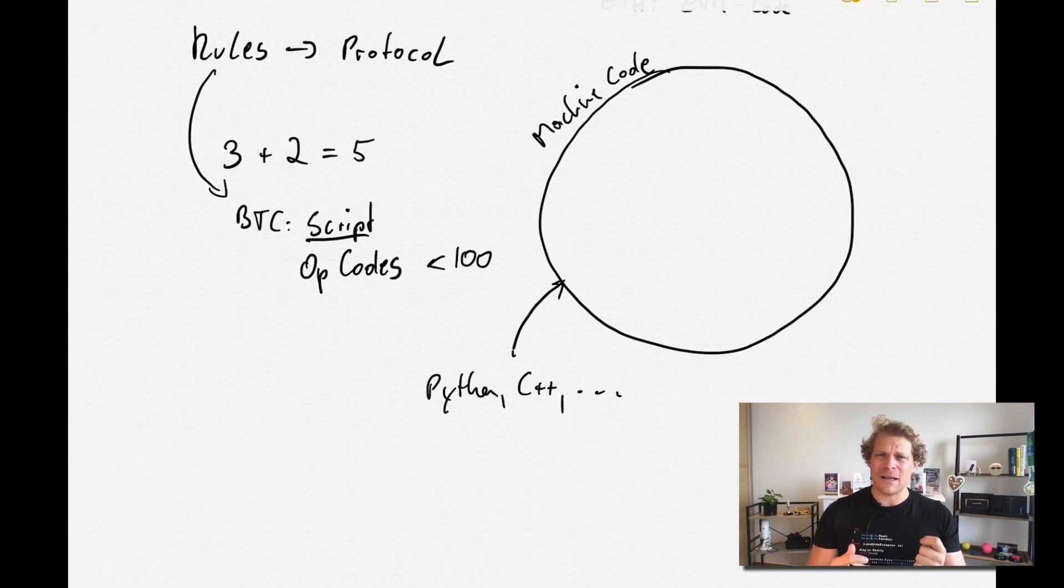But now is the thing. In Bitcoin, for example, we only have those 100 opcodes. So we're talking about a very small part of the entire thing, and let's call this basically Script. And this is not entirely correct - I just want to use this as an example.